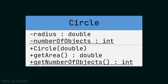Let's make a small summary. We specify the visibility using symbols — minus for private, plus for public. Later we will also see protected visibility. After specifying the visibility we put the name of the member. If the member is a method, we specify its parameters and then its return type. If the member is an attribute, we specify its name and then its type.